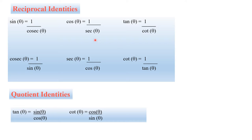These are reciprocal identities. Cot theta is equal to cos theta divided by sin theta. Cos theta is the reciprocal, and tan theta times cot theta is equal to 1.